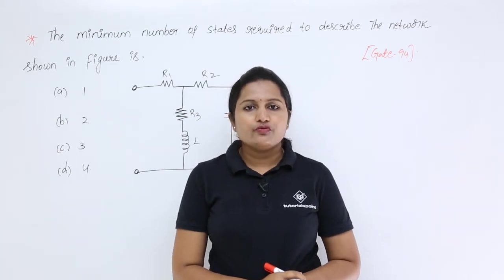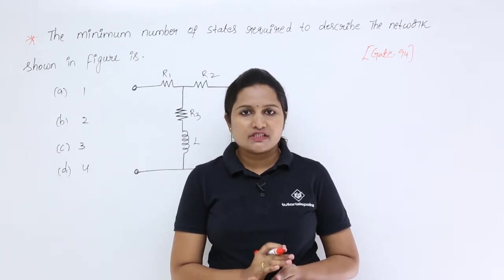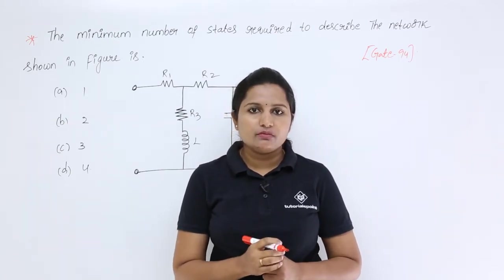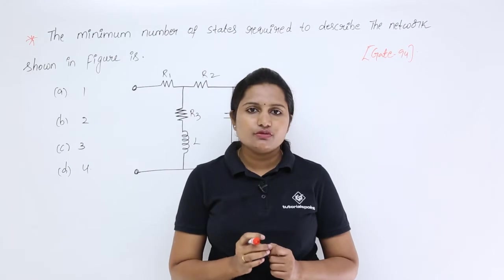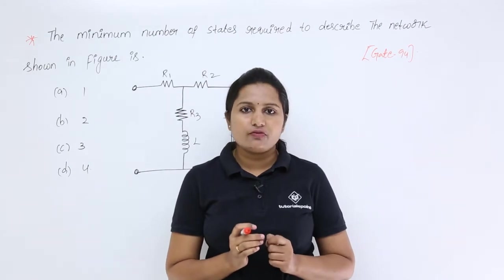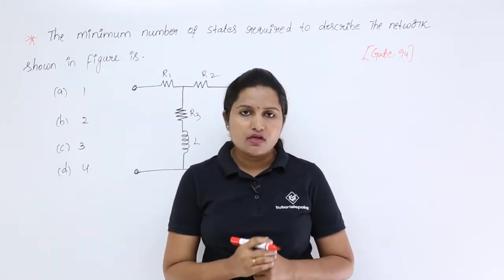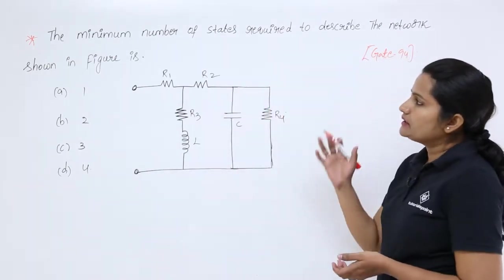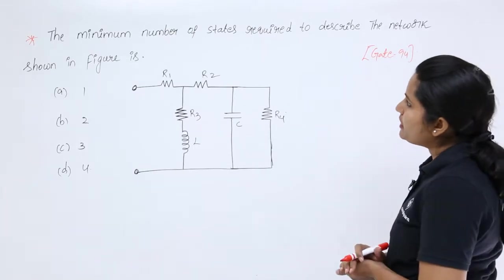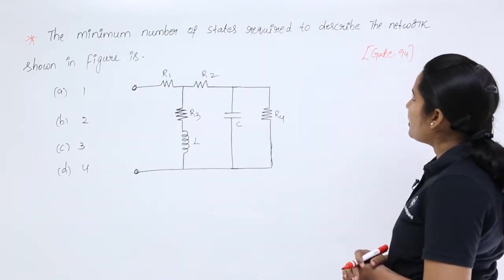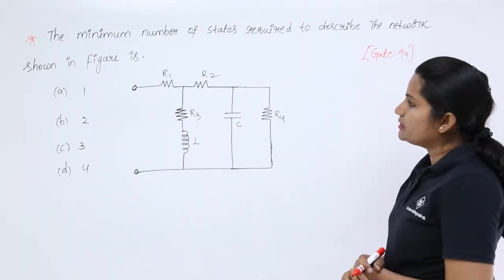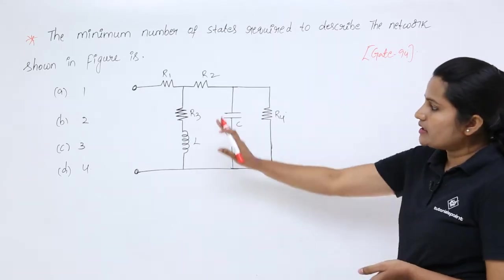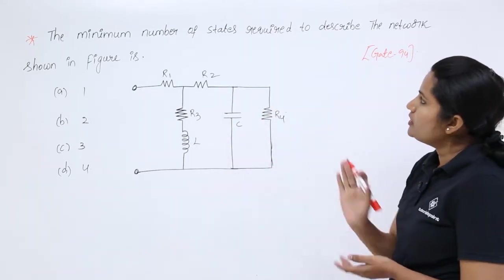In this video we are going to discuss a previous GATE problem related to states of a network. Here you can observe the problem: the minimum number of states required to describe the network shown in the figure. This is the given network.